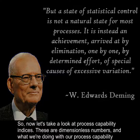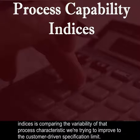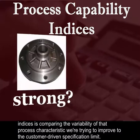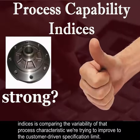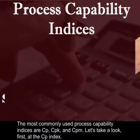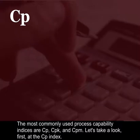Now let's take a look at process capability indices. These are dimensionless numbers, and what we're doing with our process capability indices is comparing the variability of the process characteristic we're trying to improve to the customer-driven specification limit. The most commonly used process capability indices are CP, CPK, and CPM. Let's take a look first at the CP index.